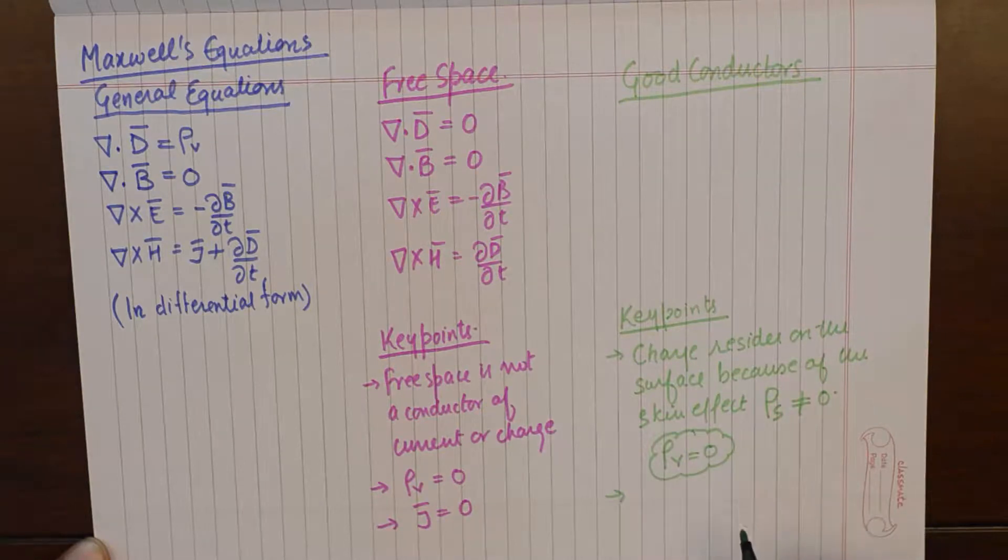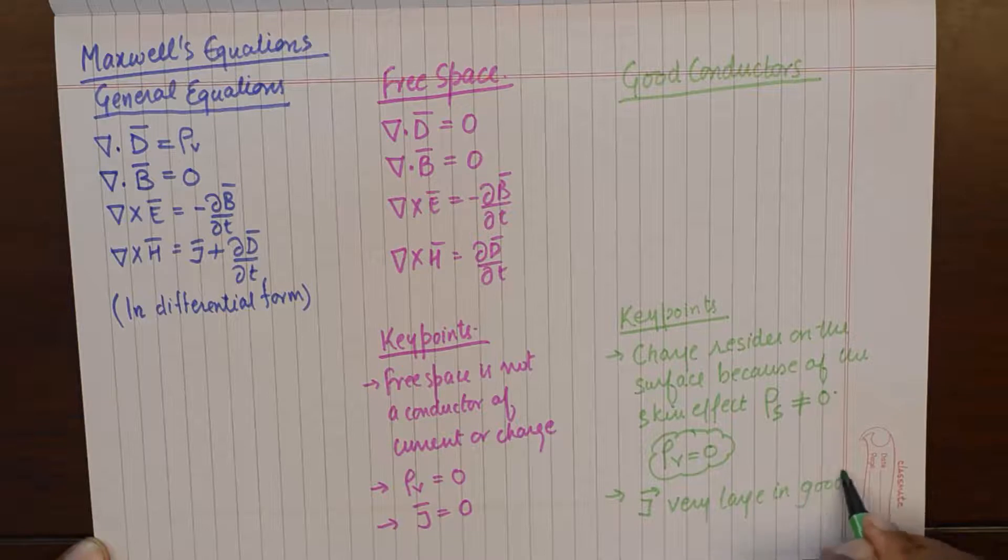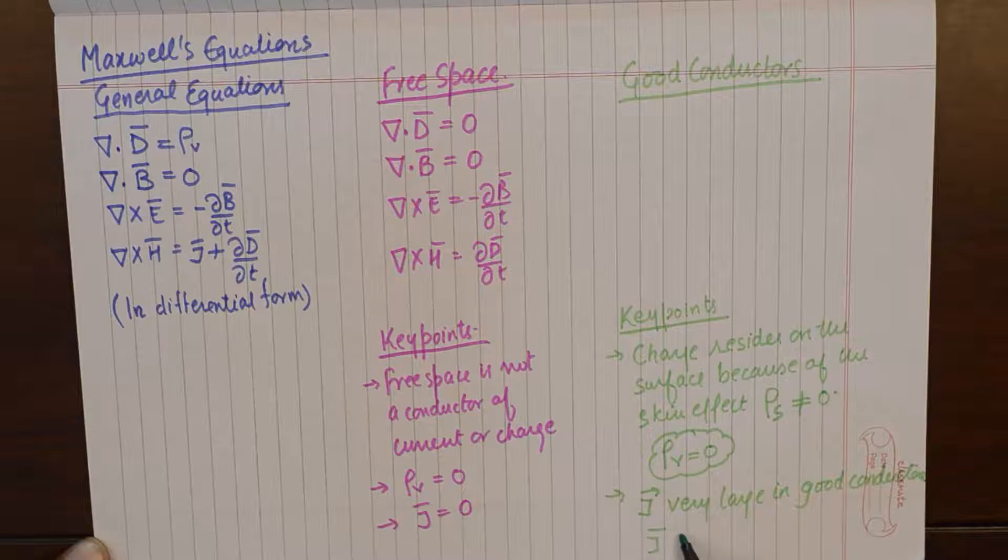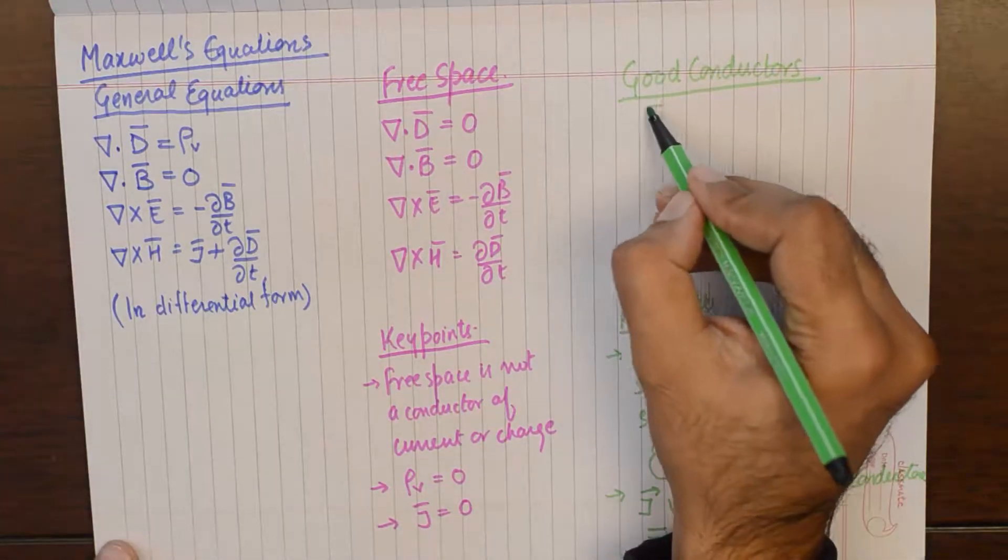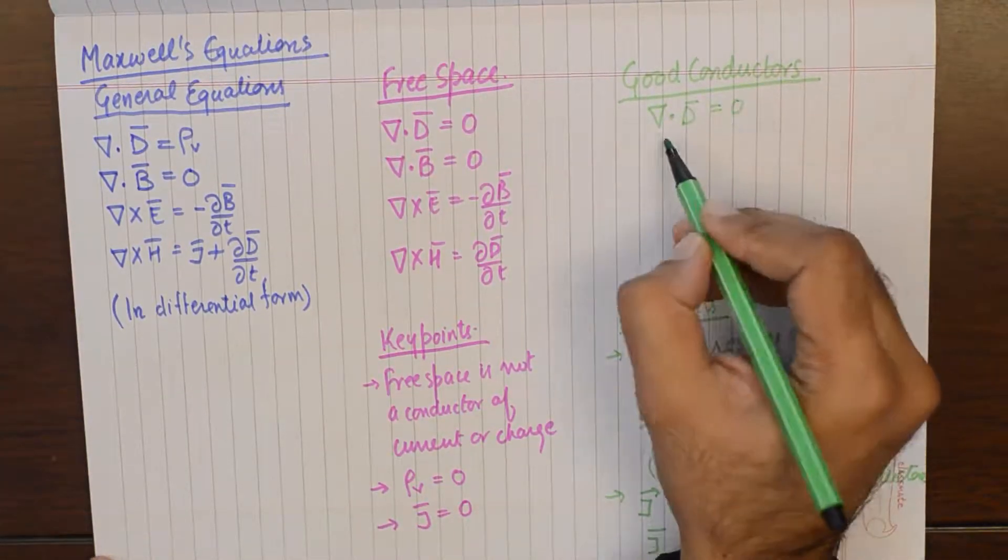Secondly, the current density J is going to be too large as compared to ∂D/∂t. J is going to be very large in good conductors. We can say that J shall be very large as compared to ∂D/∂t. If you were to use and rewrite Maxwell's equations for good conductors, they will become divergence of D becomes zero.